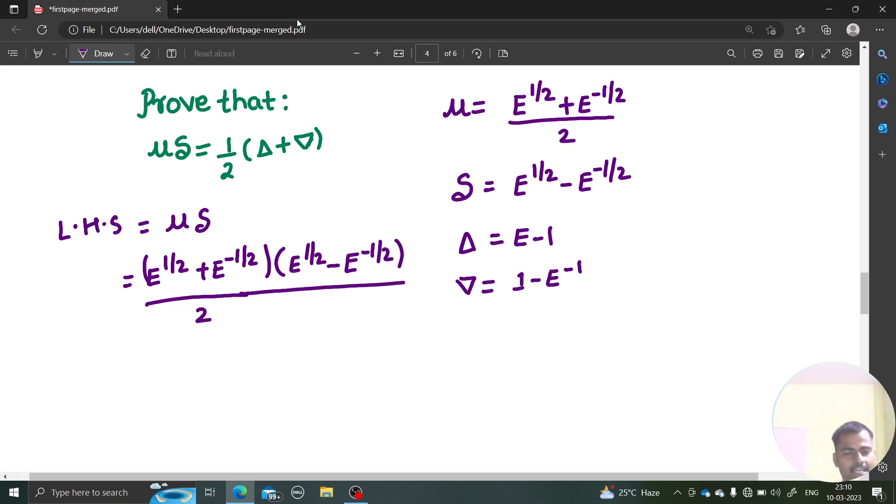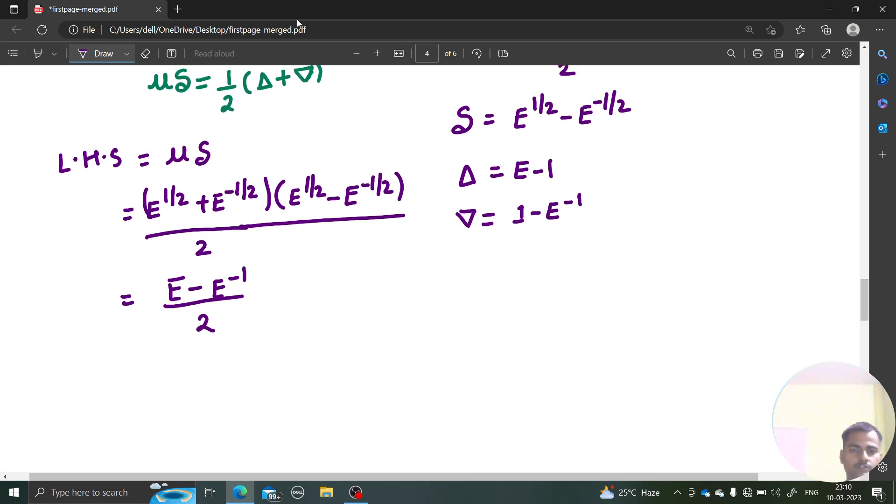If I look at this, a plus b times a minus b is a square minus b square. That will simply give you e minus e power minus 1 divided by 2. Now I will use these two relations.